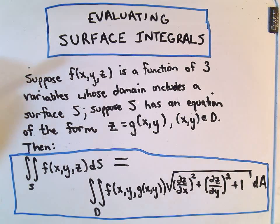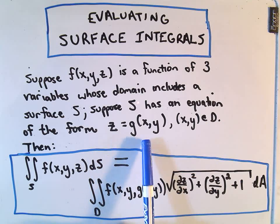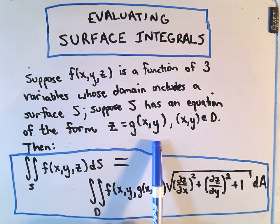Suppose we have a function of three variables x, y, and z, and suppose its domain includes some surface S. In this case we're going to suppose that S has an equation of the form z equals g(x,y), so we can write our surface in terms of the variables x and y.